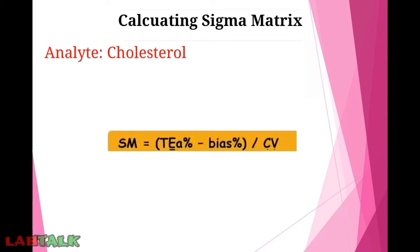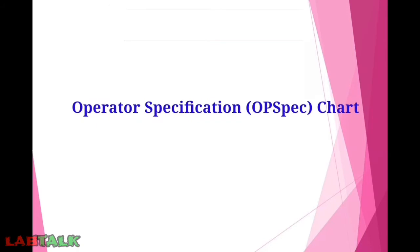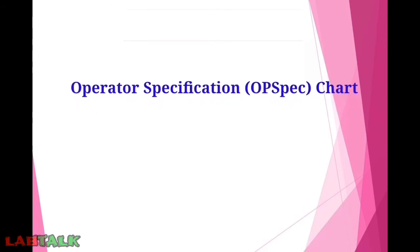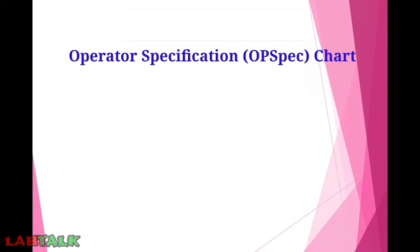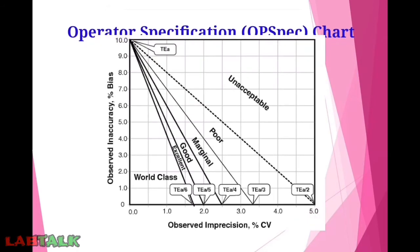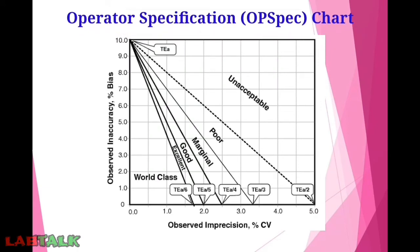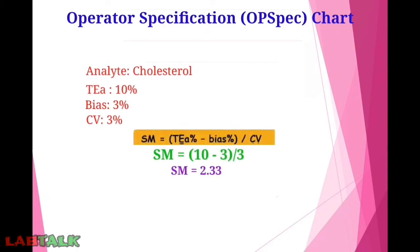Now we will see how to plot the operator specification chart, or OP spec chart. An example of the operator specification chart shows five lines in a square box grid with performance marks as: unacceptable, poor, marginal, good, excellent, and world class. We are again considering the same cholesterol example where total allowable error is 10%, bias is 3%, CV% is 3%, and sigma matrix is 2.33.